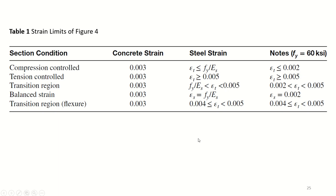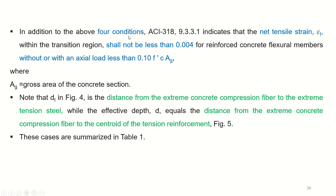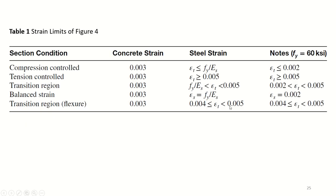These are the strain limits from the figure we just discussed. In all five sections, the concrete strain is assumed to be 0.003. In compression control, steel strain is less than the yield strain. In tension control, it exceeds 0.005. In the transition region, it is between compression and tension control values. In the balanced strain condition, steel is yielding exactly when concrete is crushing. ACI 318 also indicates that for flexural members the net tensile strain within the transition region shall not be less than 0.004, and it should be between 0.004 and 0.005.